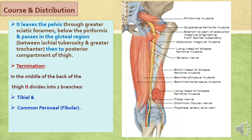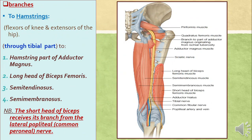At the superior angle of the popliteal fossa, the sciatic nerve divides into its terminal branches: the tibial part going towards the posterior compartment, and the common fibular part winding around the neck of the fibula. In the thigh, the sciatic nerve has no cutaneous distribution, but it supplies the muscles of the posterior compartment: the hamstring part of adductor magnus, the long head of biceps femoris, semitendinosus, and semimembranosus are supplied by the tibial part, while the short head of biceps femoris is supplied by the common peroneal part.